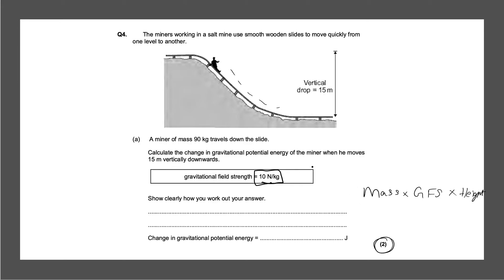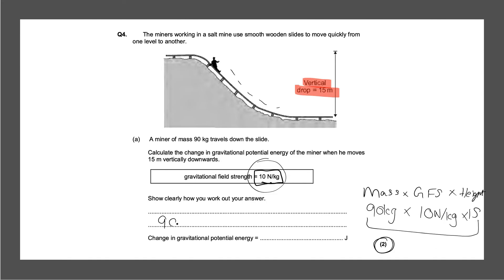The mass of the miner is 90 kilograms, which is in the correct units, multiplied by the gravitational field strength of 10 newtons per kg, multiplied by the height — which is a vertical drop of 15 meters. So we have 90 × 10 × 15, which gives us 13,500 joules. Converting to kilojoules, that would be 13.5 kilojoules. That will give you two marks: one for your working out and one for the correct answer.